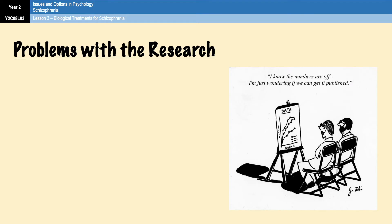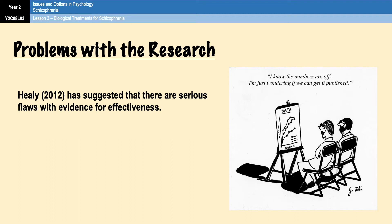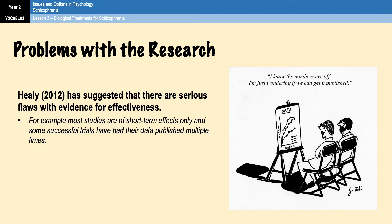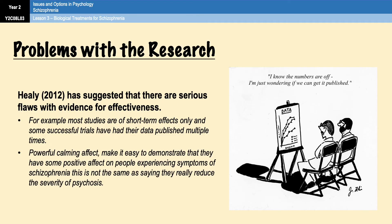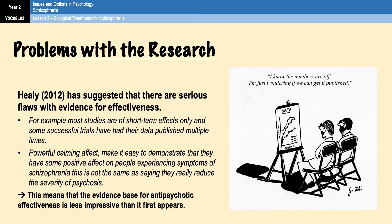However, a counterpoint is that Healy in 2012 suggested there are serious flaws with the evidence for effectiveness. For example, a lot of studies are short-term only, and some successful trials have had their data published multiple times, which exaggerates the size of the evidence base for positive effects — because you're submitting the same positive effect over and over, even though it's the same study. Also, because antipsychotics have a powerful calming effect, it's easy to demonstrate some positive impact on people experiencing symptoms, but that's not the same as saying they really reduce the severity of psychosis — it just shows they calm people down. This means the evidence base for antipsychotic effectiveness is less impressive than it first appears and needs to be taken with a pinch of salt.